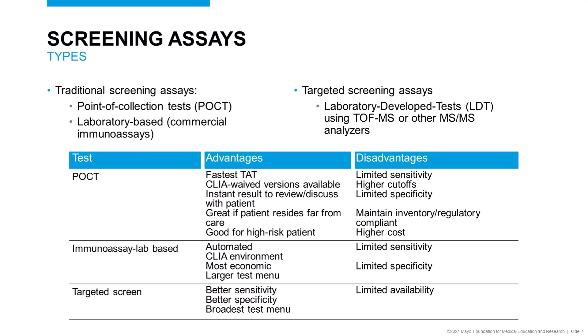Each of these types of assays has advantages and disadvantages. Point-of-care tests have the advantage of the fastest turnaround time, so physicians can get an immediate result, which is good for high-risk patients or those who reside far from care. Laboratory-based immunoassays are typically more economical; however, all immunoassays suffer from higher cutoffs, limited sensitivity, and specificity. On the other hand, targeted screens have better sensitivity and specificity but are not widely available at all local laboratories.